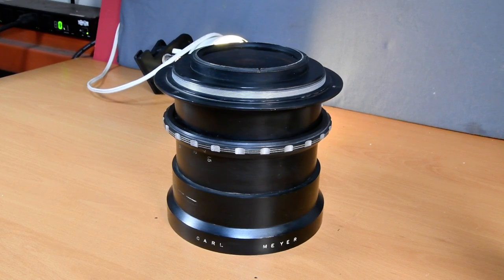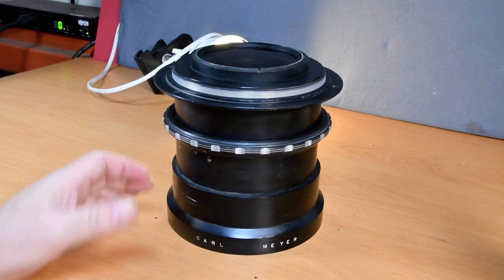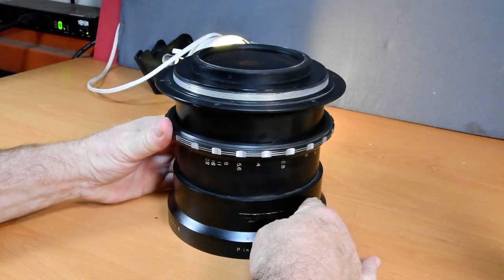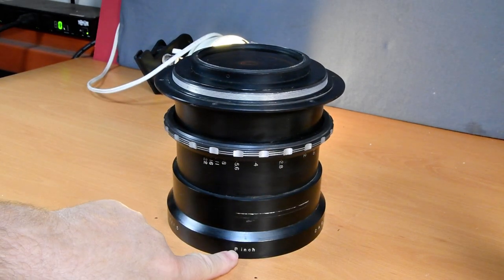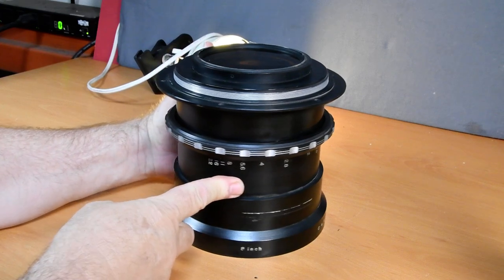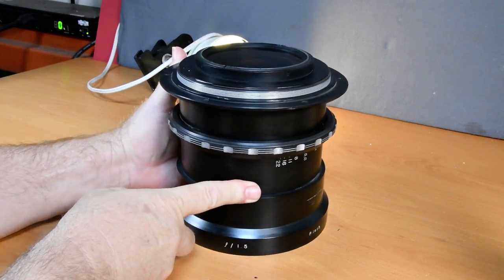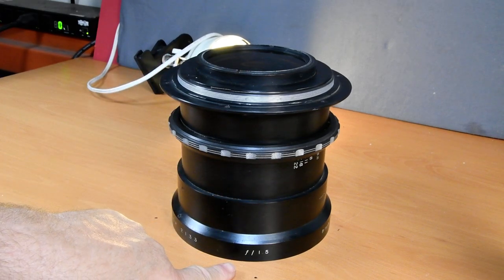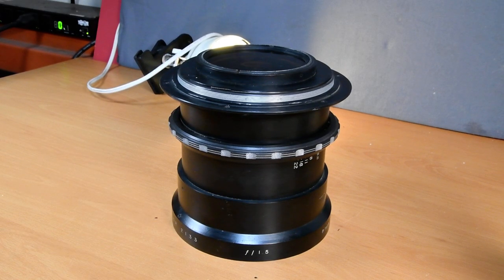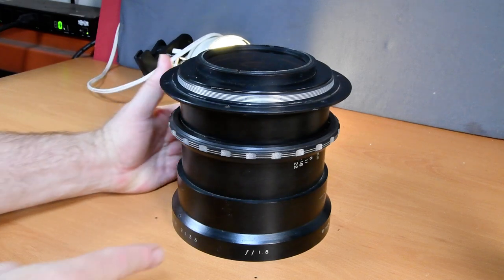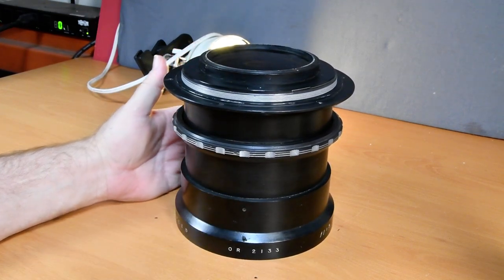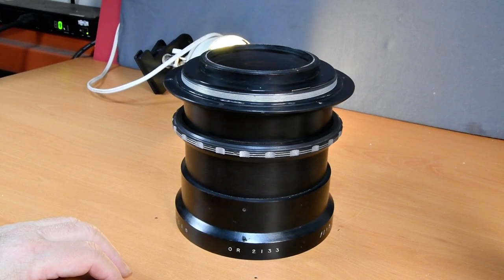This is a Carl Meyer lens, it is monstrous. It's 8 inches in diameter and what's incredible about it is it's a very fast lens at f/1.5. Now I think this is either a serial number or a part number.